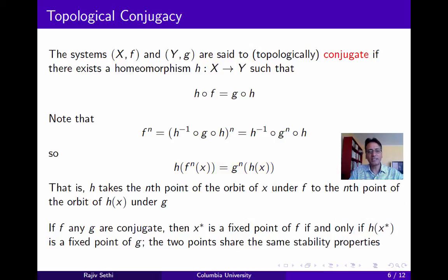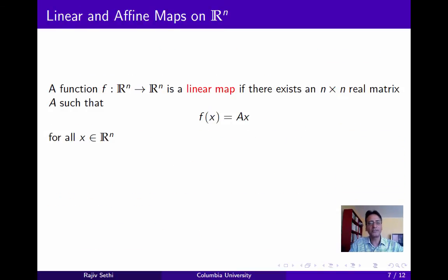You can easily check that if f and g are conjugate, then x-star is a fixed point of f if and only if h(x-star) is a fixed point of g. In fact the two points will share the same stability properties. If x-star is stable in the first dynamical system, then h(x-star) will be stable in the second. Now for the rest of this segment we'll focus on linear systems in Euclidean space.